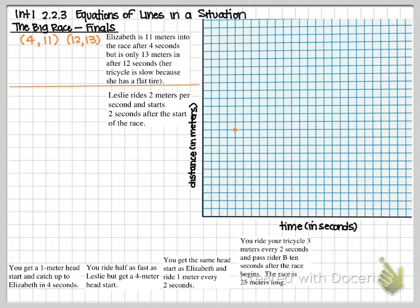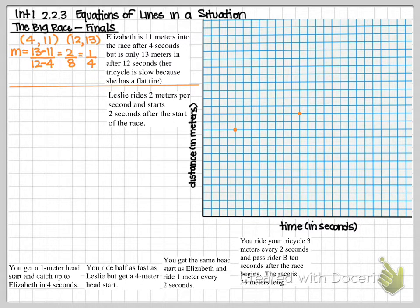Plotting 12 comma 13 gives us a second point, which means we have enough information to graph the line. I want you to see if you can find the slope between those two points. I went ahead and calculated the slope using the slope formula: the second y (13) minus the first y (11) over the second x (12) minus the first x (4). That gives 2 over 8, which simplifies to 1/4.